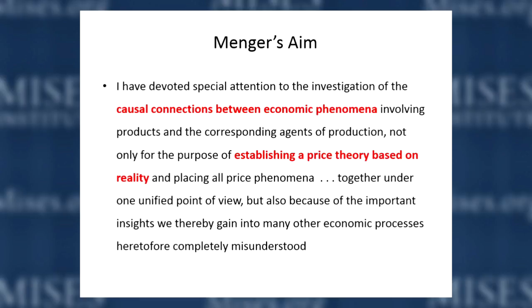Menger's aim was to stress causation and reality. From 1867 to 1871 he was a journalist who followed markets, and he saw that commodity prices and stock prices were changing from minute to minute and day to day. He realized the classical theory of price was incorrect, and for those years he was hard at work developing his own conception of economics.